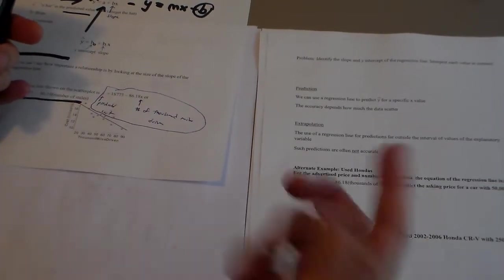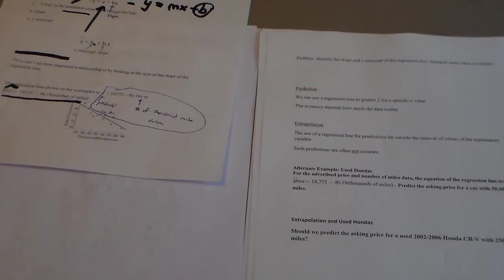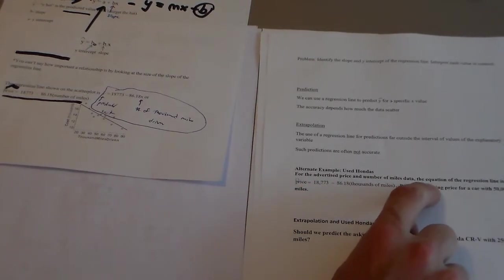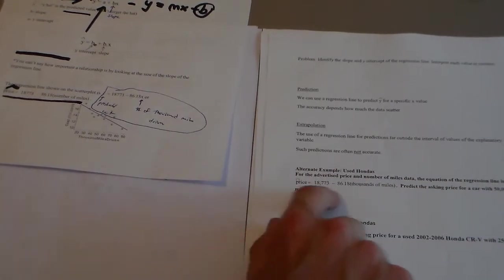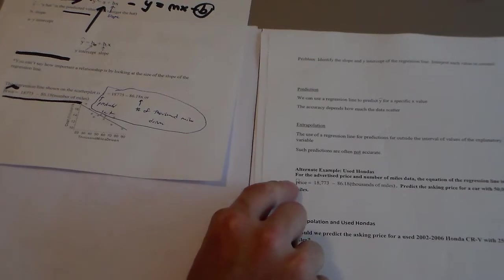So I'm going to use this example right here, and it actually has it right here. It says for the advertised price and number of miles of data, the equation of the regression line is the same one. They have this little square here.